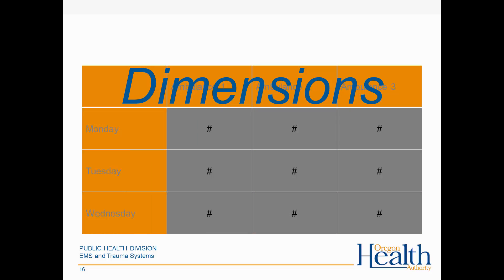Dimensions, on the other hand, are how you slice and dice the data. They're the descriptive attributes by which you measure the measures. Examples of dimensions would include things like the complaint reported by dispatch, dates on a calendar, locations, etc. You can't add or average them because they're not numbers — they're not measurable. You use dimensions to categorize or filter the data that you are measuring.